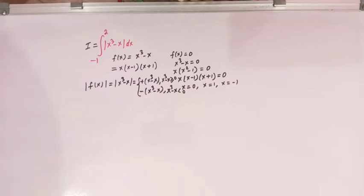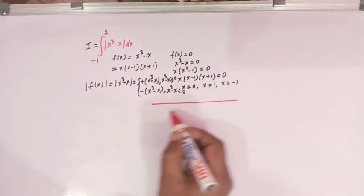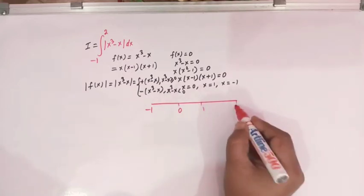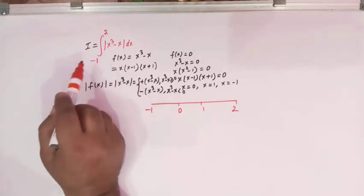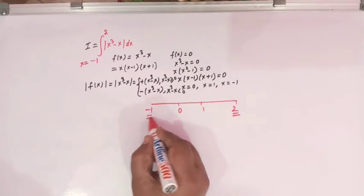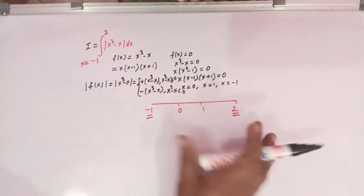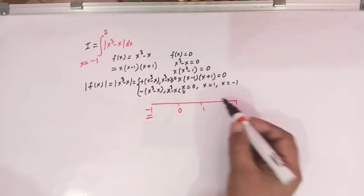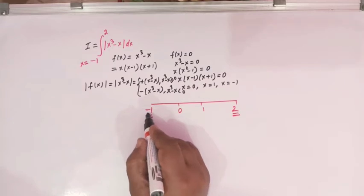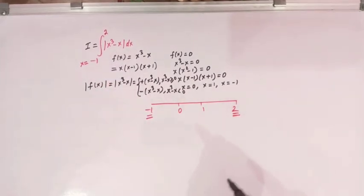Now here we have the points x equal to 0, 1, and minus 1. On the number line we have minus 1, then 0, then 1, and then 2, because we have to integrate this function from minus 1 to 2 — this is the upper limit and this is the lower limit. Now we have to decide the sign of f of x in these intervals.